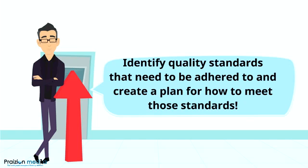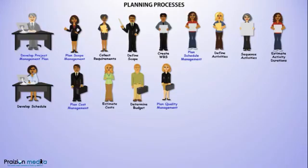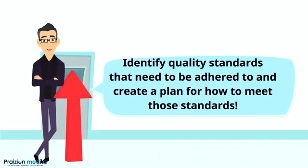The next process is Plan Quality Management. In this process we obtain a quality management plan that defines the quality standards that need to be adhered to on the project, and also a plan of action for meeting those quality standards or targets.